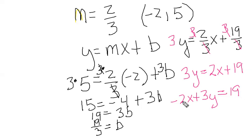And if you wanted your leading term to be positive, you multiply each part by negative 1 and just change all the signs. So this is 2x minus 3y equals negative 19.